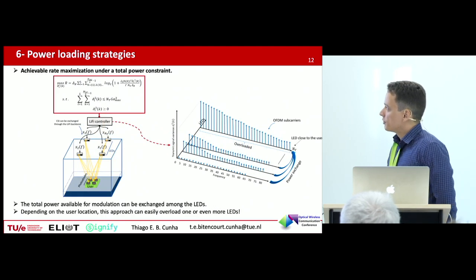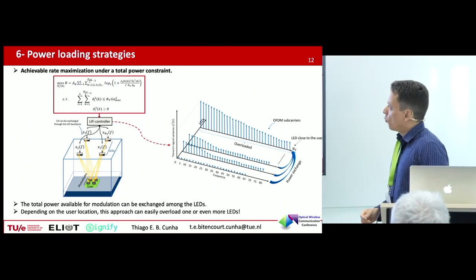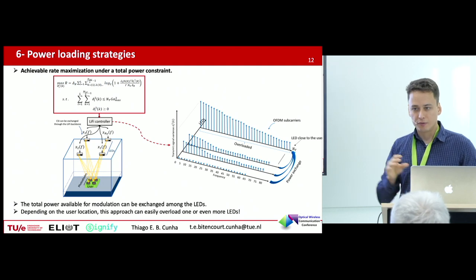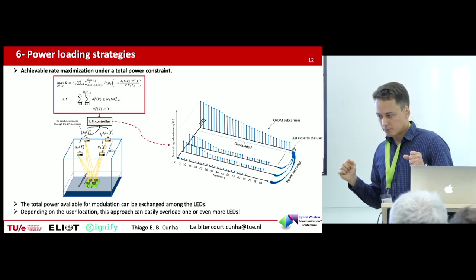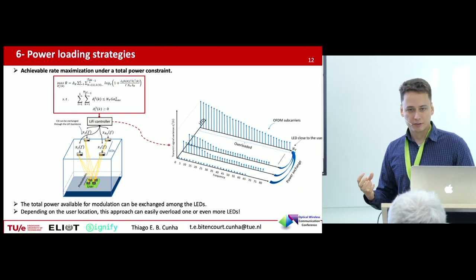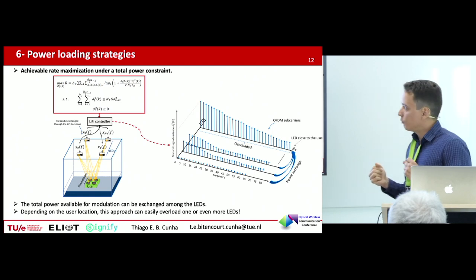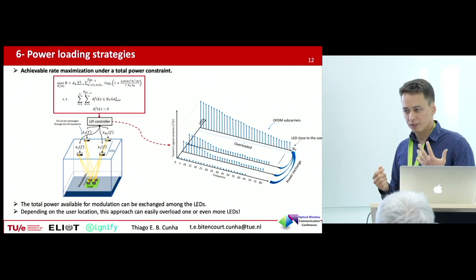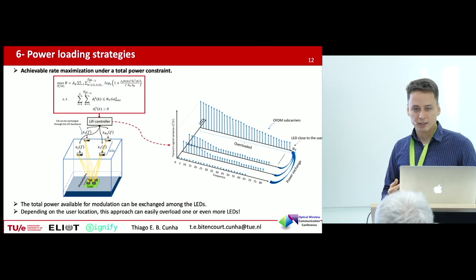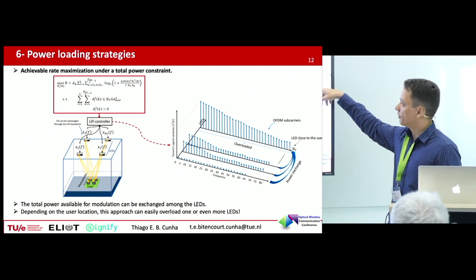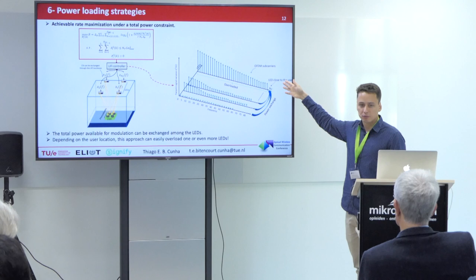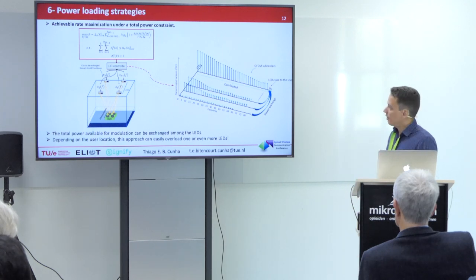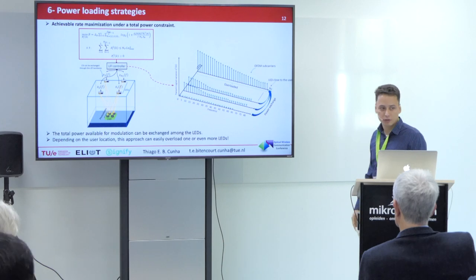One common approach used in RF is the maximization of achievable rates, where the controller has one total amount of power and is free to allocate power over the antennas or LEDs. But what happens is that the algorithm tries to push power onto the strongest channels. In optical communications, the strongest channel is the LED closest to the user. So the algorithm is going to push a lot of power onto the strongest channel. But this means that LED can be overloaded — we are going to struggle with problems of clipping distortions, thermal effects, and so on. So is that RF strategy also good for optical wireless? It can be not.